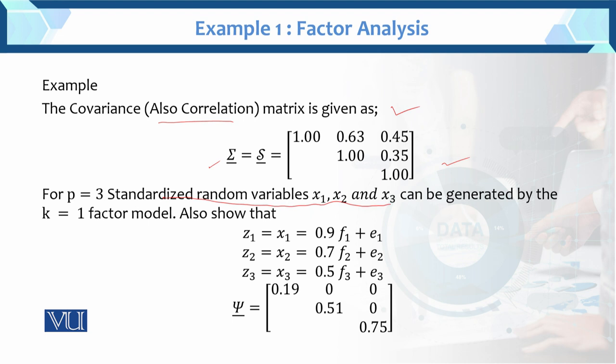In the standardized variables, we have called them x1, x2, x3 and further z1, z2, z3, because we have used standardized variables. Standardized means mean equals 0 and variance equals 1. This can be generated by the k equals to 1 factor model.